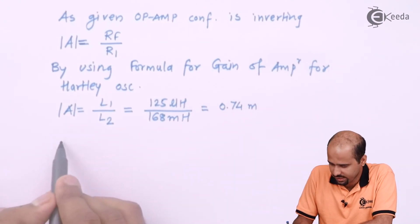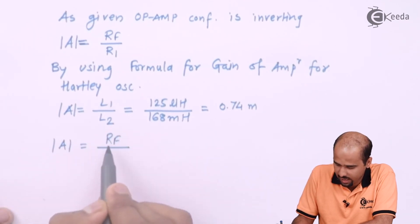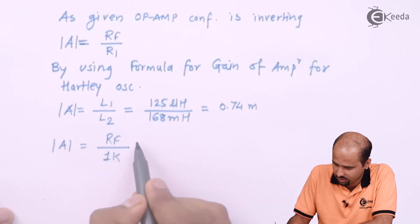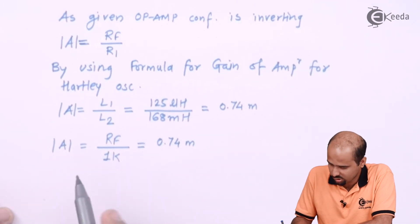So rather than that, I will say that the value of A is equal to RF divided by R1 is 1k which has been given and that should be equal to 0.74 milli, okay? So I can say that RF value is very, very less,